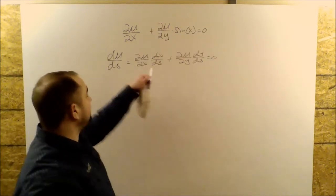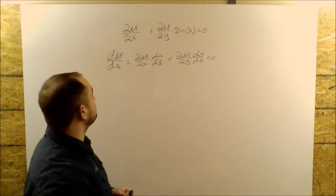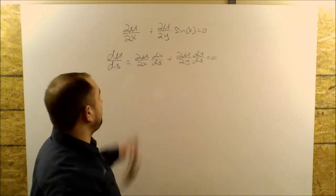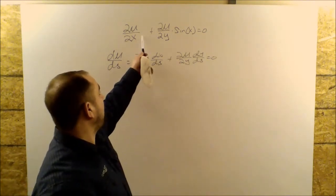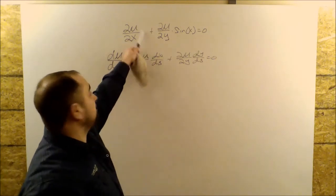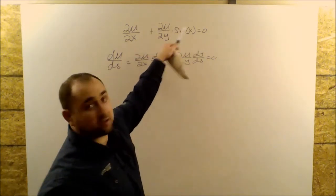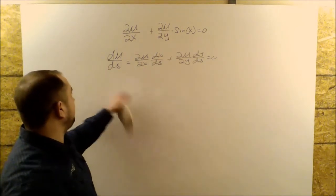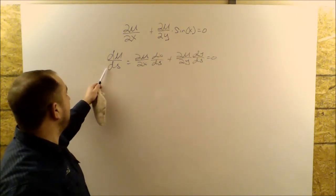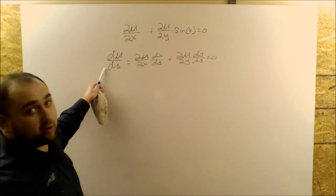All right guys, this is the same type of equation as our previous example. The only difference is that A is defined as 1, it's just 1, and B is a function of X. Okay, so I've gone ahead and taken the derivative of U with respect to our new variable S.